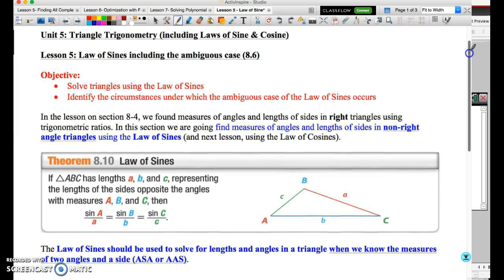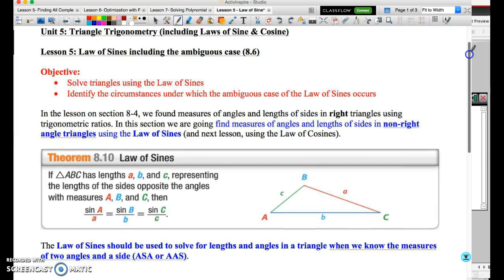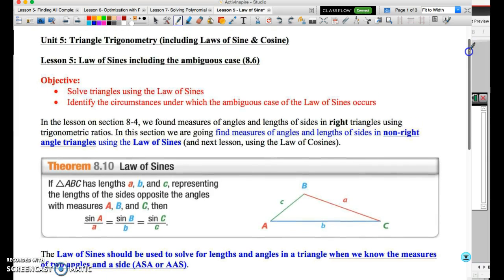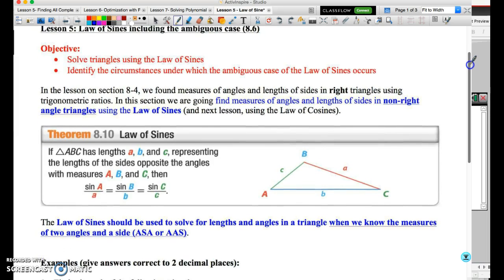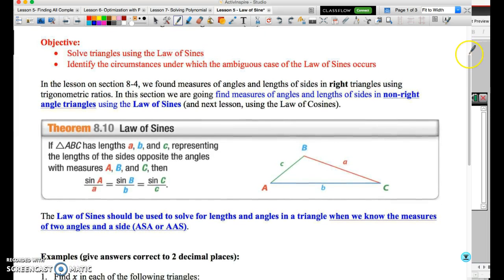We are trying to find the lengths of sides and the measures of angles in triangles. But what we're going to do in this lesson is extend the trigonometry ideas, the SOHCAHTOA idea, beyond a right triangle. What we're looking to do is find the measures of angles and the lengths of sides in non-right angle triangles. We cannot use SOHCAHTOA because it only applies for right triangles. So we're going to introduce the first of two laws that can be used in non-right triangles.